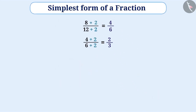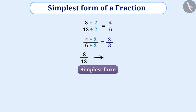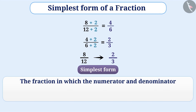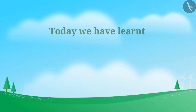Now here we can see that there is no common factor of the numerator and denominator except 1, so we cannot divide it further. So we can say that the simplest form of 8 by 12 is 2 by 3. The fraction in which the numerator and the denominator have no common factor except 1 is called the simplest form or lowest form of a fraction. Today, we learnt the following concepts related to fractions.